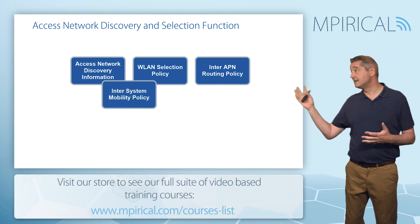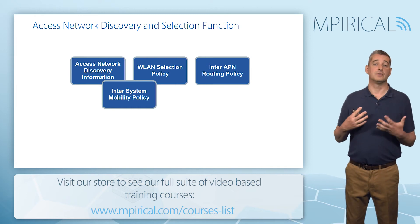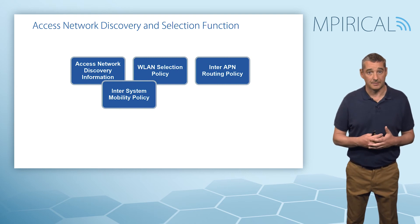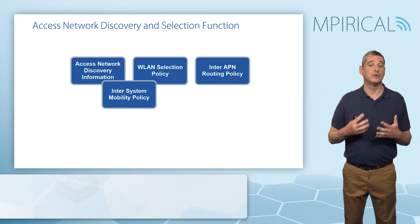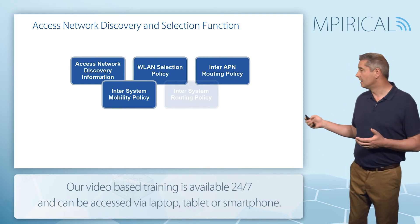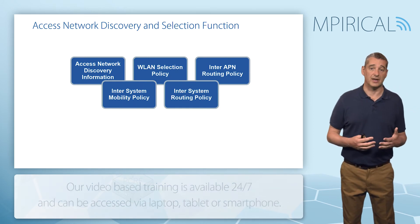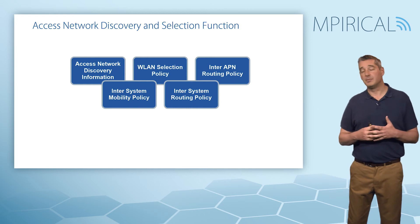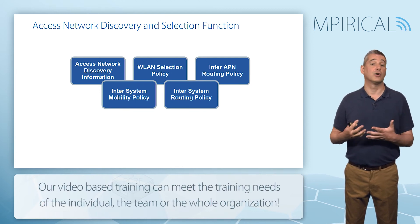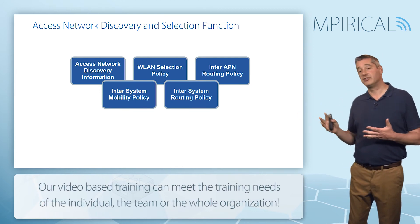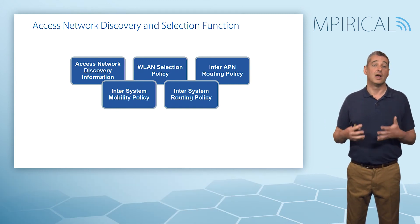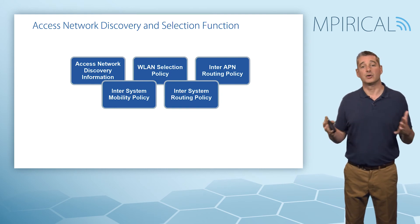The fourth policy deals with the inter-system mobility policy, aimed at phones not capable of operating Wi-Fi and cellular simultaneously, indicating whether traffic should be sent across the LTE network or the Wi-Fi network. Finally, we have the inter-system routing policy, similar to the inter-APN routing policy in that it tells the mobile which traffic flows need to be sent across which networks, but not restricted to certain PDN networks or APNs — different flows associated with the same APN could be delivered across different access networks.